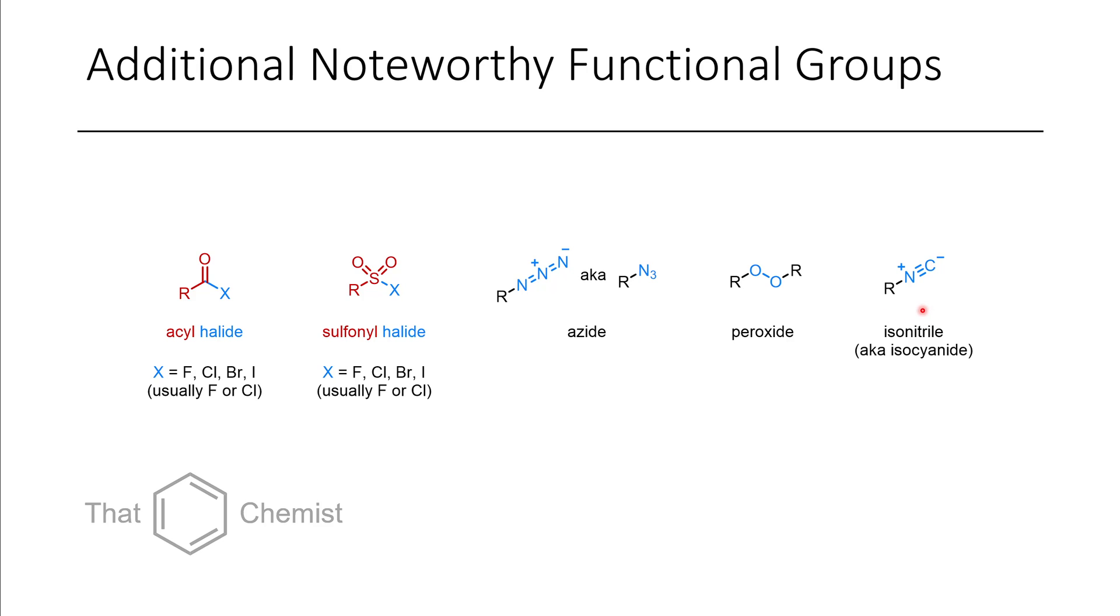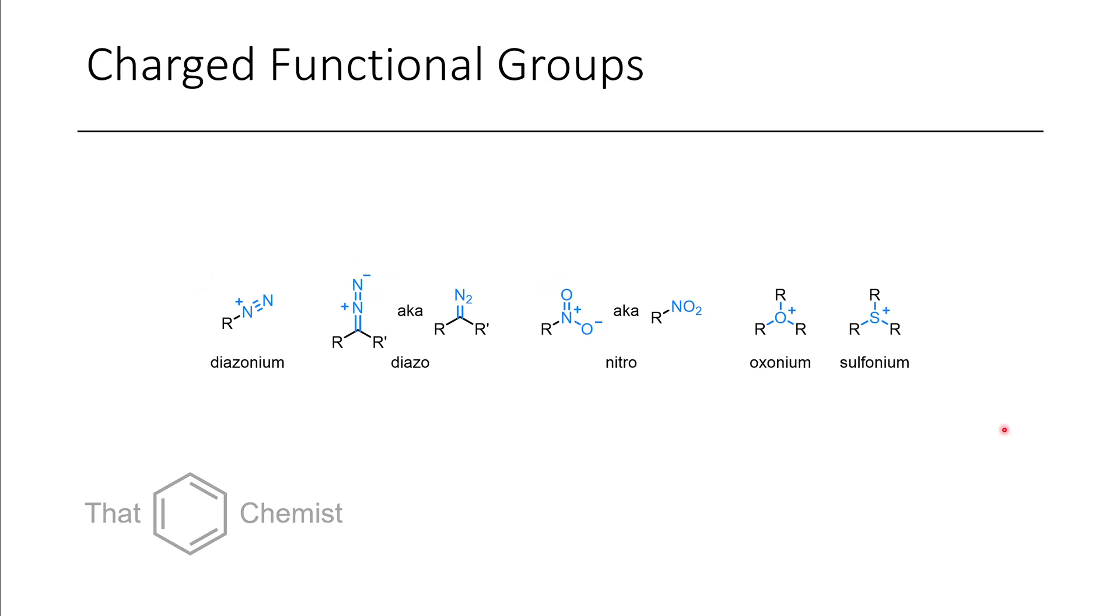It's also possible to have, instead of a nitrile, like we saw in the previous episode, an isonitrile. And so, in this case, the nitrogen and the carbon have just been switched around. Some other interesting compounds that are charged include diazoniums. These are really good leaving groups, as you'll see later in this course. Diazo groups, which are also really good leaving groups. It's also possible to have a nitrogen with two oxygens, which is called a nitro group. As well as oxoniums and sulfoniums, which are charged species that tend to be quite reactive.